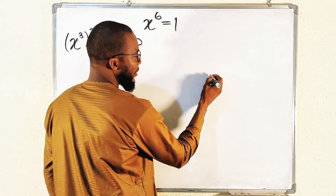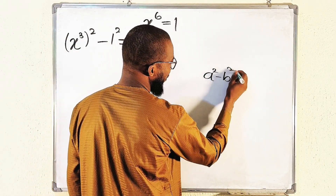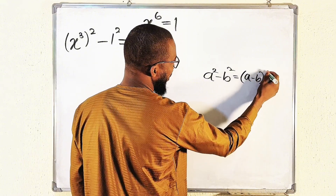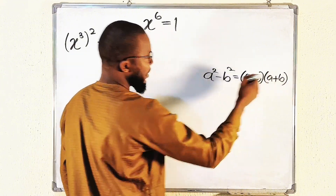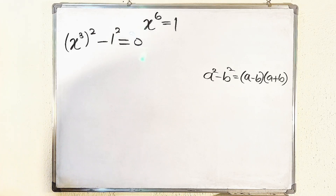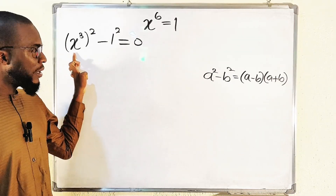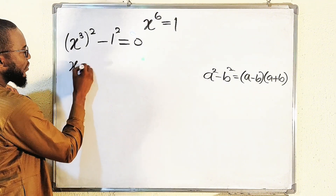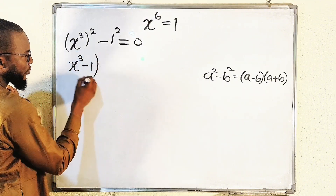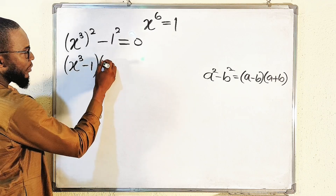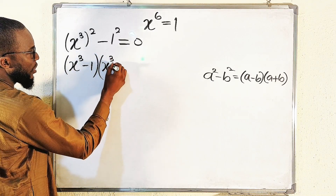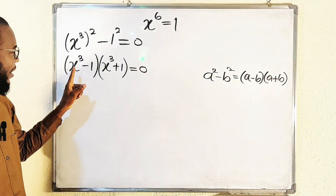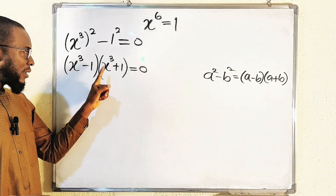This is a difference of two squares. If you have a² minus b², this equals (a minus b)(a plus b). Applying the same principle, with a = x³ and b = 1, we get (x³ minus 1)(x³ plus 1) equals 0.